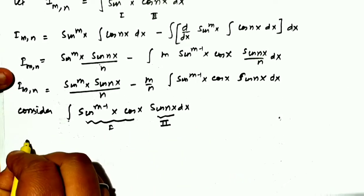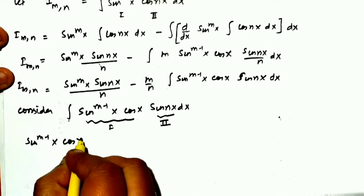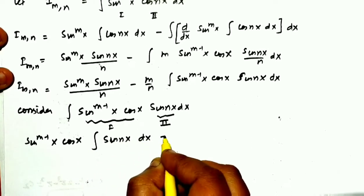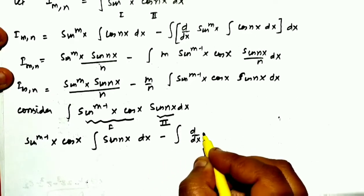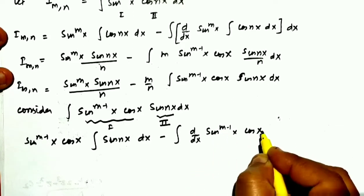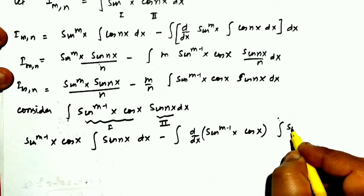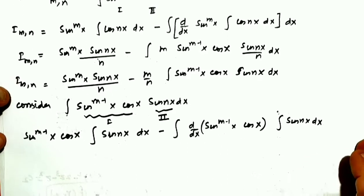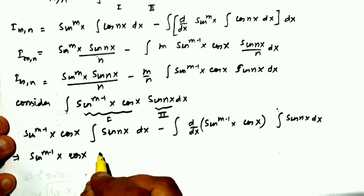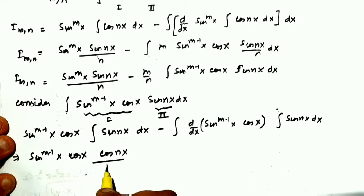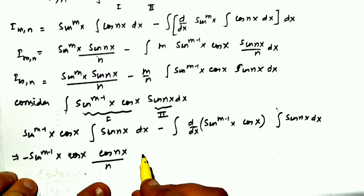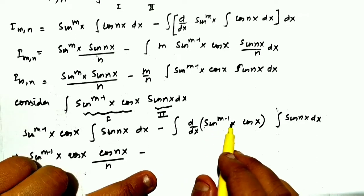Applying integration by parts: first function sin^(m-1)(x)·cos(x) times the integral of the second function, giving sin^(m-1)(x)·cos(x)·[−cos(nx)/n], minus the integral of the differentiation of sin^(m-1)(x)·cos(x), bracket closed, times [−cos(nx)/n] dx. We take the minus outside, and simplify using the product rule.